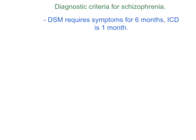Diagnostic Criteria for Schizophrenia. The diagnostic criteria for schizophrenia are very similar in the ICD and the DSM. But the major difference is that the DSM specifies that signs of disturbance must be present for at least 6 months, while the ICD requires that important symptoms are only present for 1 month.